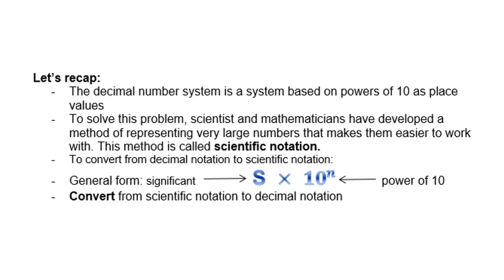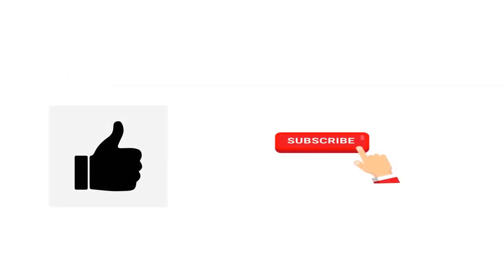Alright, let's quickly recap. The decimal number system is a system based on powers of 10 as place values. Scientists and mathematicians have developed a method of representing very large numbers that makes them easy to work with — this method is called scientific notation. To convert from decimal to scientific notation, you need a significand — that means one number in front of a decimal comma — times 10 to the power of N. This is Ahmed Suleiman with Mathematics with Amps.